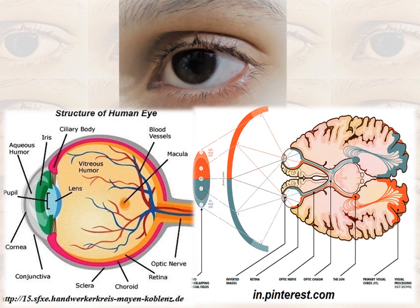This is the beautiful eye of a young boy named Sujal. If we cut through and see the eye, we can observe various parts: the cornea, aqueous humor, iris, pupil, lens, ciliary muscles, vitreous humor, blood vessels, macula, optic nerve, retina, choroid, and conjunctiva. Light enters here, makes an image, and that image is converted into neural impulses through the optic nerve.